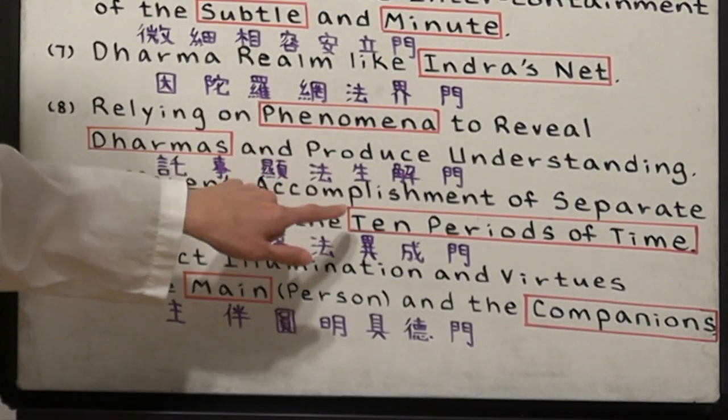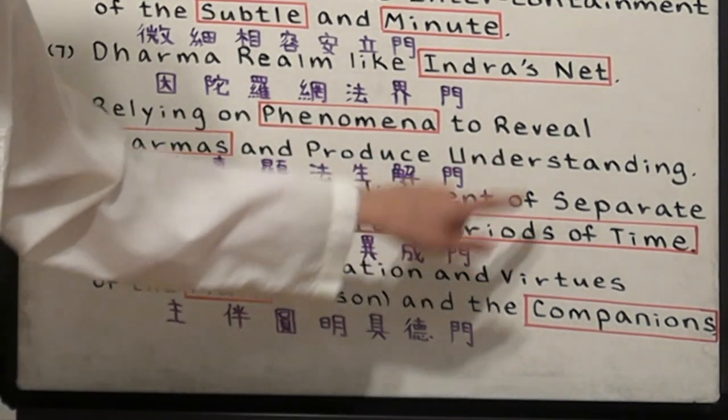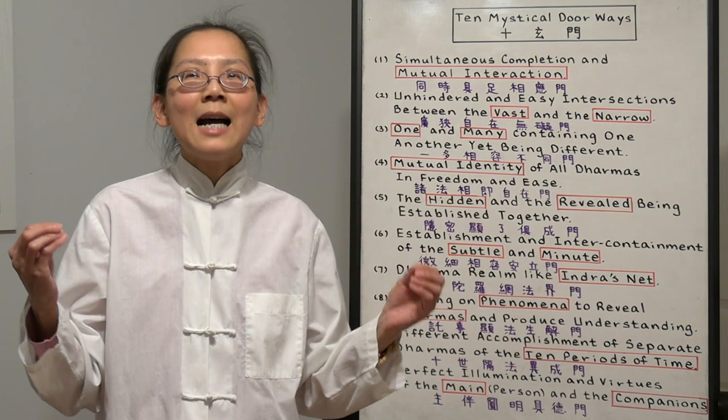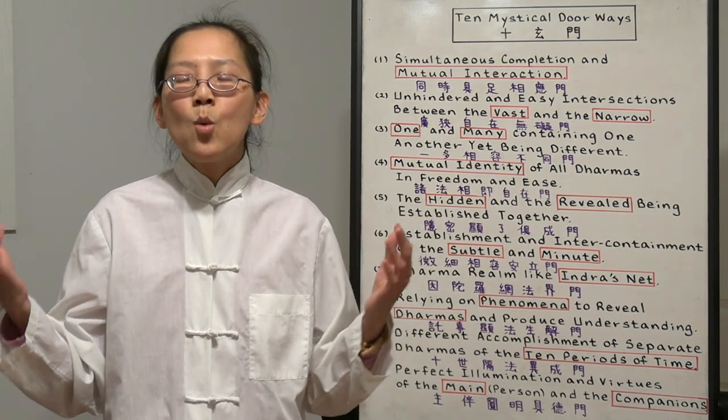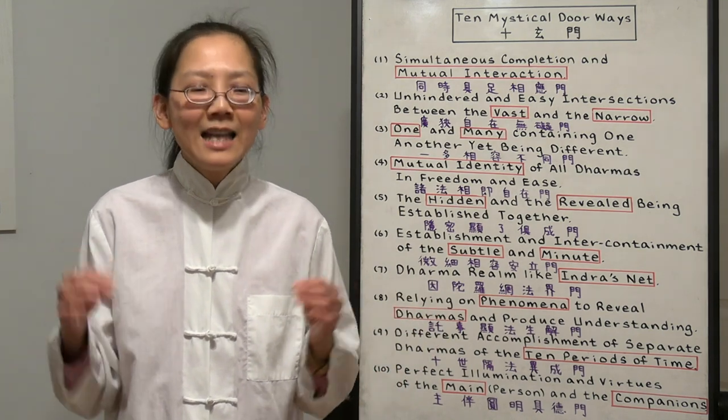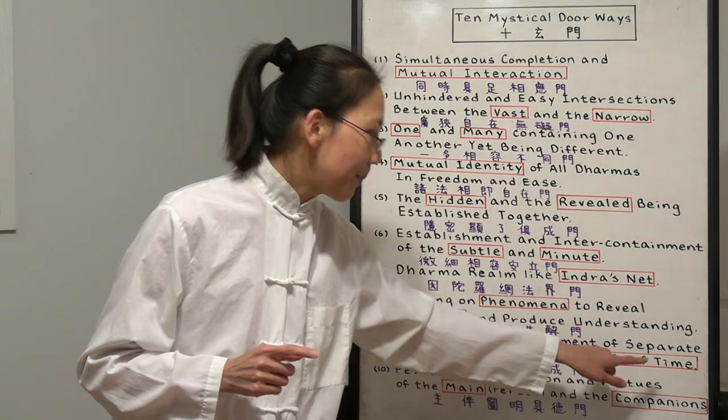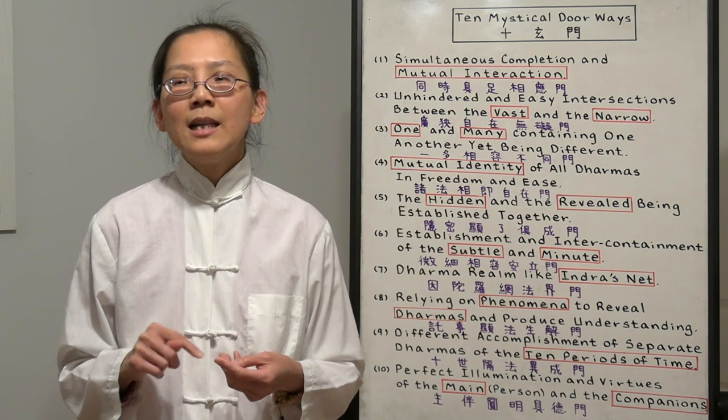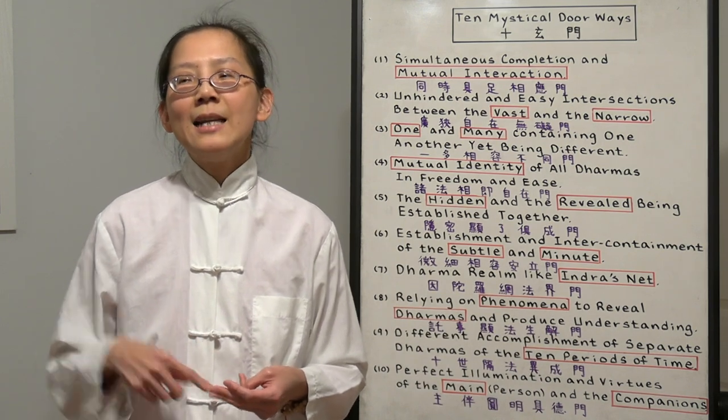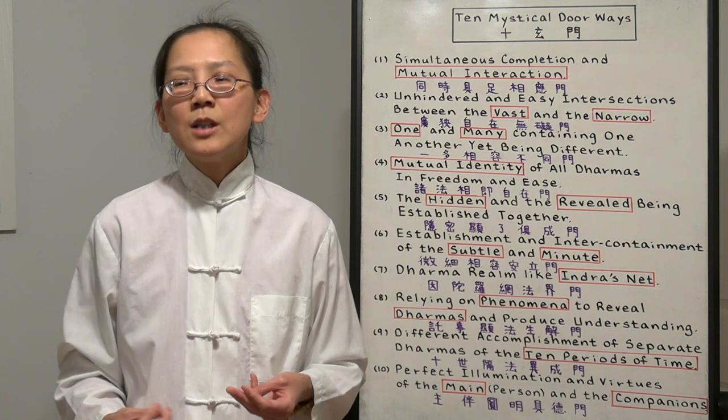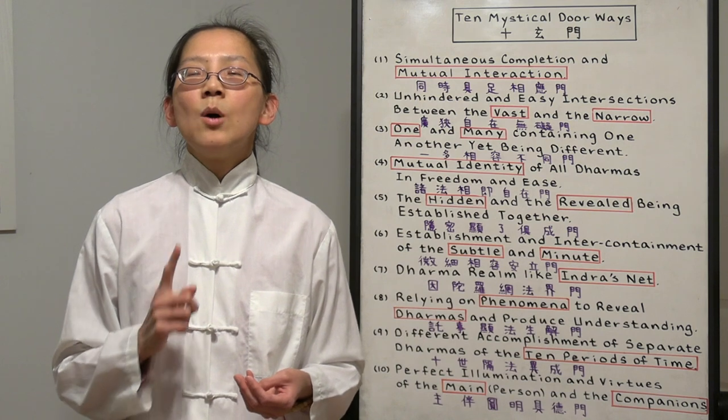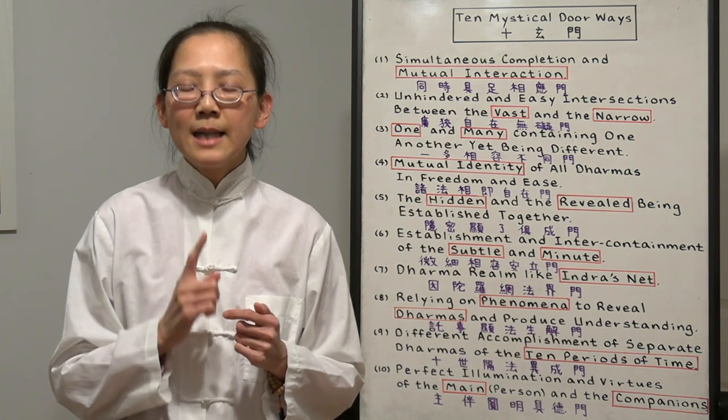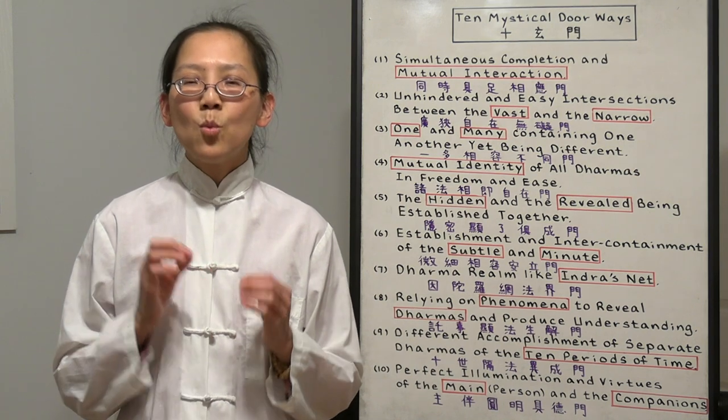Number nine, different accomplishment of separate dharmas of the ten periods of time. Now it's talking about time. Our mind is without limitation in terms of time or space. Time and space are all relatives created by our minds. They should not hinder us in any way. Ten periods of time. We have the past, present, and future. In the past, there is past, present, and future. In the present, there's also past, present, and future. And in the future, there's also past, present, and future. So three times three is nine plus one, which is our thought at this one moment. Every period of time is within this one moment in time. Our one single thought. Nothing is beyond this one single thought right now.